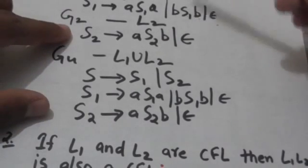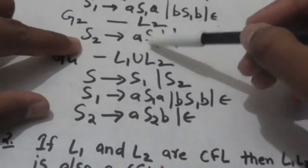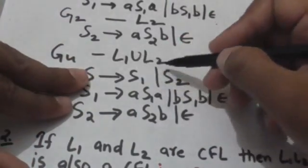There is another context-free grammar G2 whose language is L2. Both L1 and L2 are context-free languages because their grammars are context-free grammars. The productions of grammar G2 are: S2 derives A, S2 B, and S2 derives empty string. Since L1 and L2 are context-free languages, their union L1 union L2 will also be a context-free language.